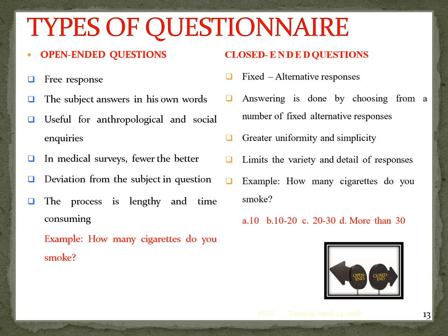There are two types of questionnaire: open-ended and closed-ended. In open-ended it is free response; in closed-ended it is alternative response. For example, in a survey on oral cancer asking how many cigarettes someone smokes, open-ended answers vary (5, 10, 20), whereas closed-ended gives fixed options like 5, 10, or 10 to 15. In open-ended the subject answers in their own words; in closed-ended they choose from fixed alternatives.